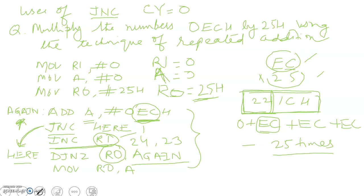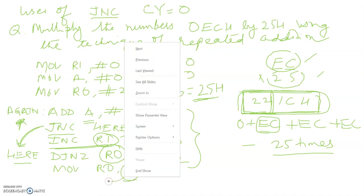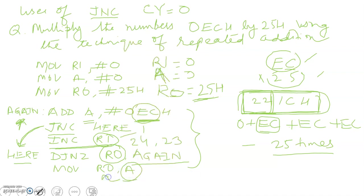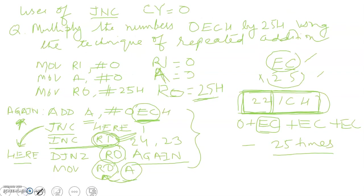We are basically adding EC 25 times, so that means EC × 25. Finally, when you run it, the LSB will be stored in A and then moved to R0, and the MSB will be carried in R1.